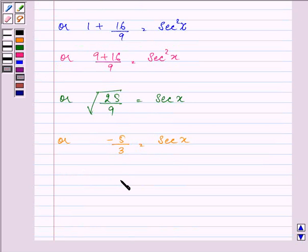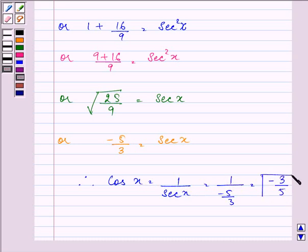We can easily find cos x, that is 1 divided by sec x, that is 1 divided by minus 5/3, which equals minus 3/5.